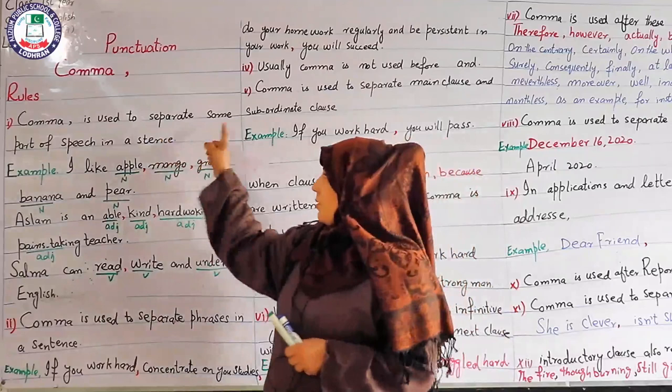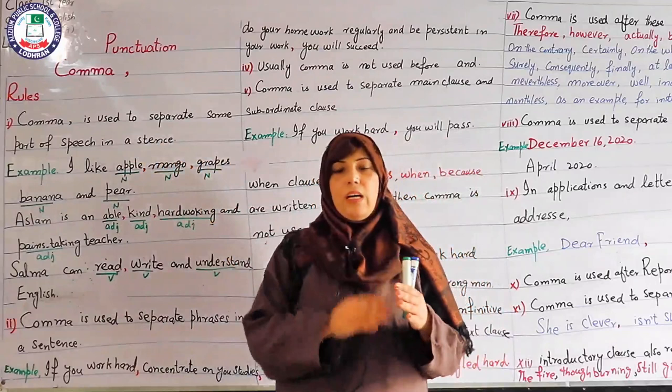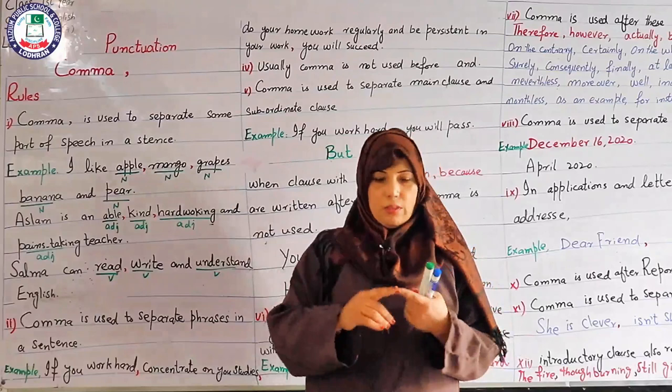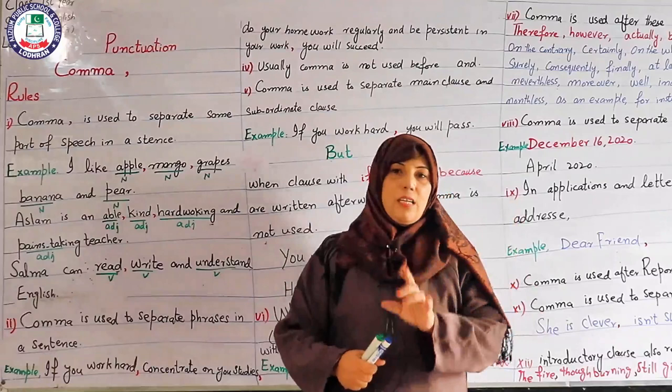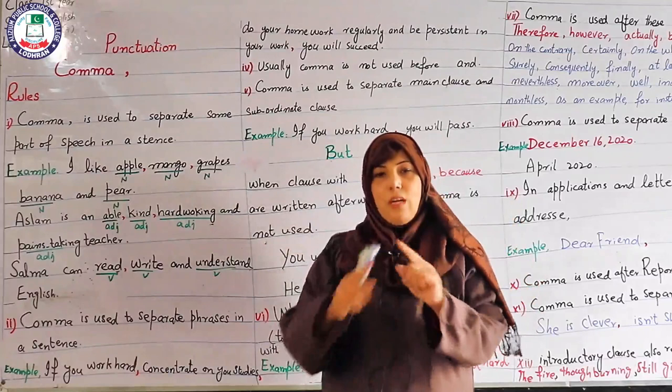Rule number one: comma is used to separate the same part of speech in a sentence. When the same part of speech occurs in a sentence, we separate them with the comma. They can be noun, pronoun, adverb, adjective, preposition, etc. When same parts of speech appear, we separate them with commas except for the last two — we put 'and' between the last two parts of speech.